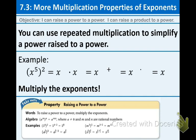You can use repeated multiplication to simplify a power raised to a power. Here's a really nice example. We have x to the fifth raised to the second. That little two out there tells us that we're going to be multiplying x to the fifth times itself, so x to the fifth twice.